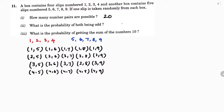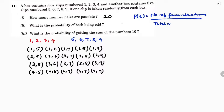Total number of outcomes is 20. Probability of an event equals number of favorable outcomes divided by total number of outcomes. So here, probability of both odd numbers — total number of outcomes is 20.